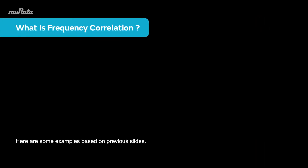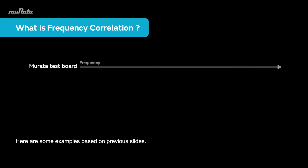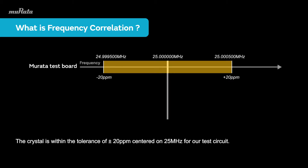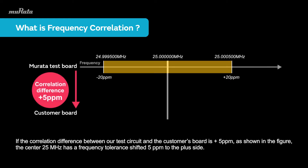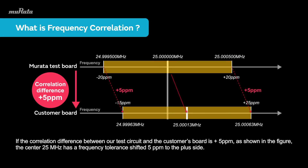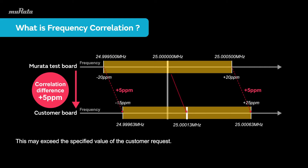Here are some examples based on previous slides. The crystal is within the tolerance of plus or minus 20 ppm centered on 25 megahertz for our test circuit. If the correlation difference between our test circuit and the customer's board is plus 5 ppm as shown in the figure, the center 25 megahertz has a frequency tolerance shifted 5 ppm to the plus side. This may exceed the specified value of the customer's request.